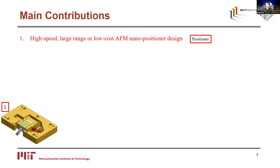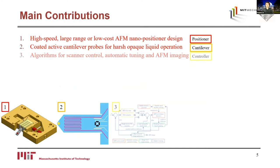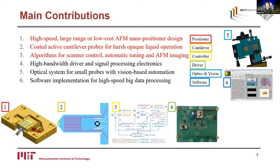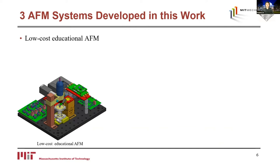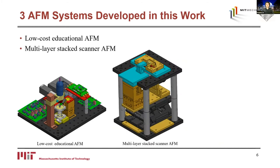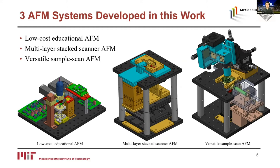There are a total of seven contributions. The first is the high-speed, large-range, or low-cost AFM nano-positioning design — key to enabling high-speed and large-range imaging. The second is coated active cantilever probes for harsh opaque liquid operation. The third is algorithms for scanner control, automatic tuning, and AFM imaging. The last we'll focus on is AFM system integration for visualization — explaining how we put this together. This slide shows simplified CAD designs of the three AFM systems: the low-cost educational AFM on the left, the multi-layer stack scanner AFM in the middle, and the versatile pile sample scan AFM on the right.